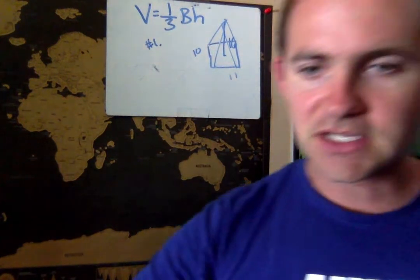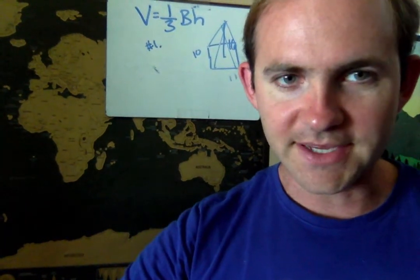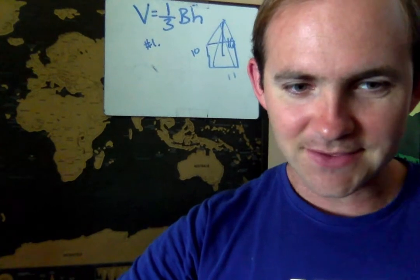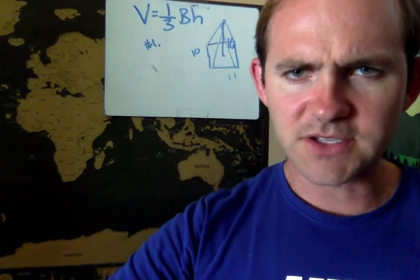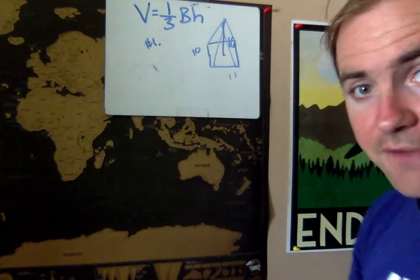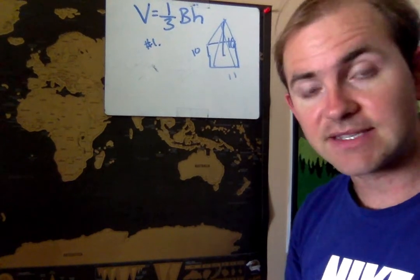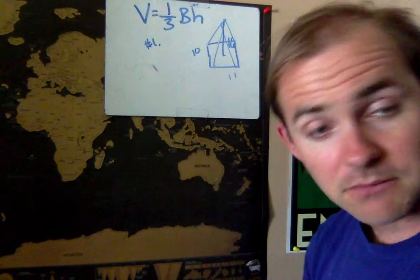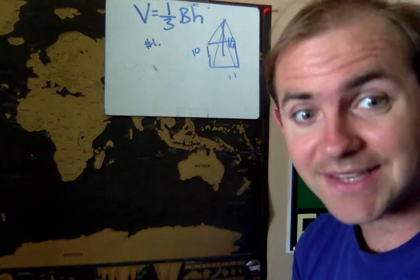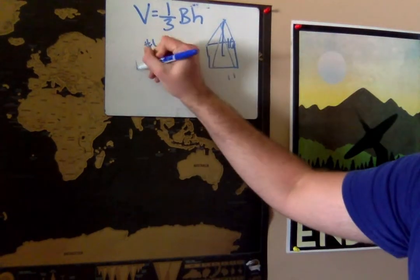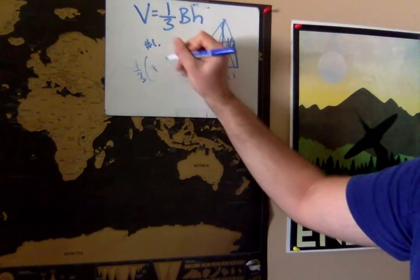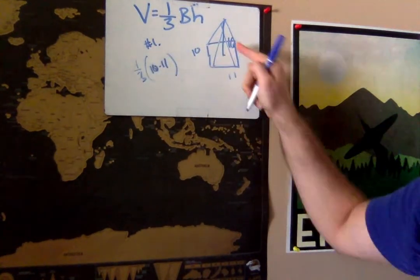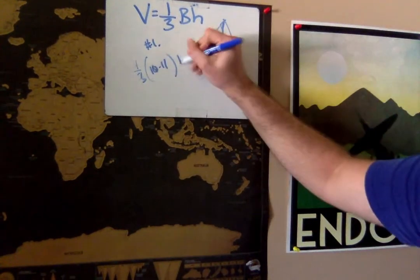I apologize for how badly that's drawn, but we all do the best we can. So how exactly are we going to approach this problem? Well, we're going to first use one third area of the base times height. Now, if the base is a rectangle, how do I find the area of a rectangle? Base times height, or I could say length times width. So all I need to do here is one third base times height, that's going to be 10 times 11, and then the height of the actual pyramid is 16.